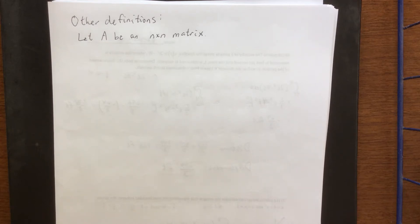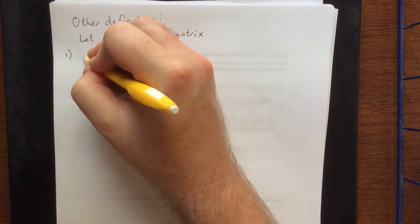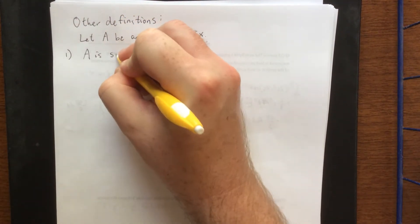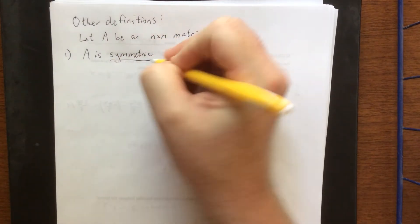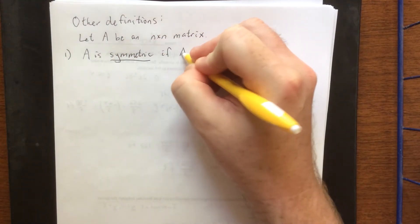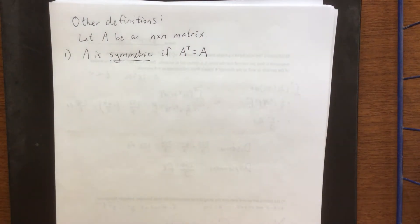Some other definitions that are going to be relevant to us as we work through the process of orthogonal diagonalization. The first one would be let A be an n by n matrix. The first definition is A is symmetric if you take the transpose of A and you wind up with exactly the matrix A.